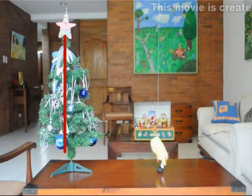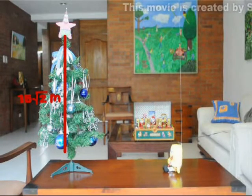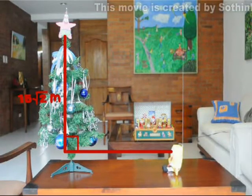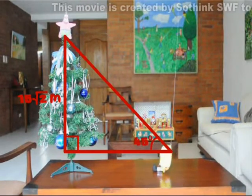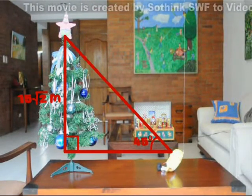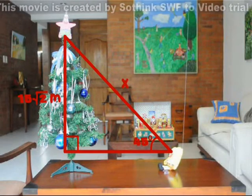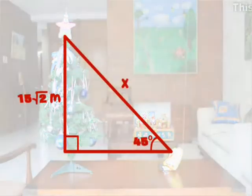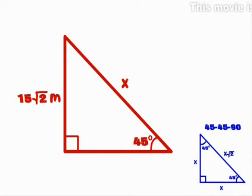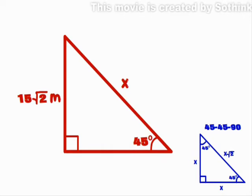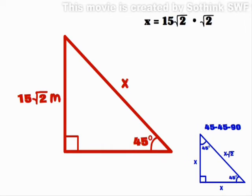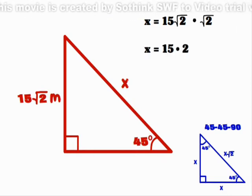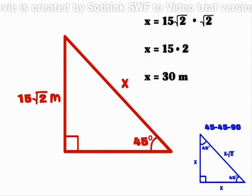If Patrick's star is on the top of a 15√2-meter tall Christmas tree and the angle of elevation of SpongeBob SquarePants to Patrick is 45 degrees, how far is SpongeBob from Patrick? Using the concepts of the 45-45-90 special triangle, we can deduce that the length of the hypotenuse is equivalent to the length of the given leg multiplied by square root of 2. So X equals 15√2 times √2, which equals 15 times 2. X equals 30 meters.